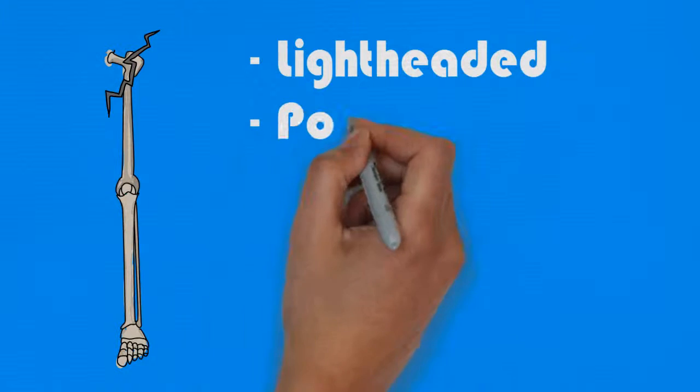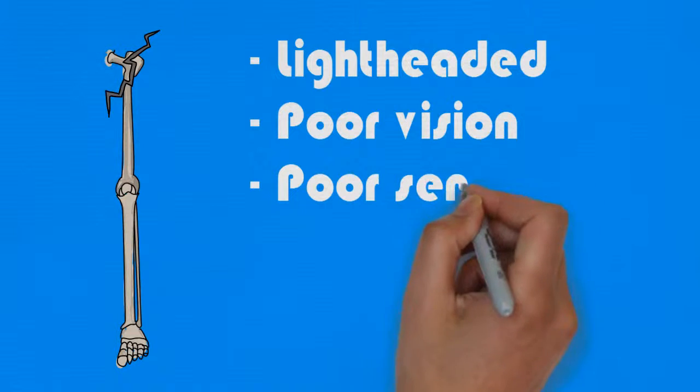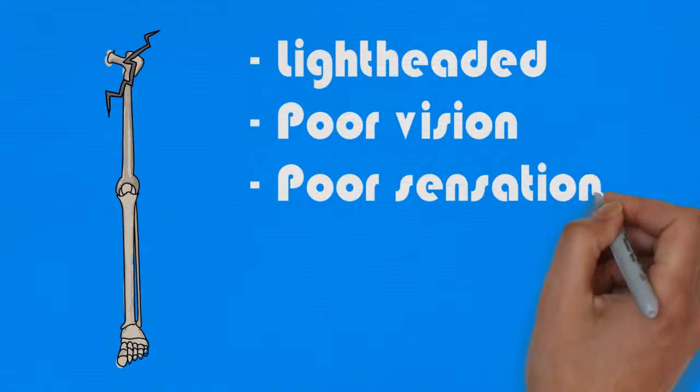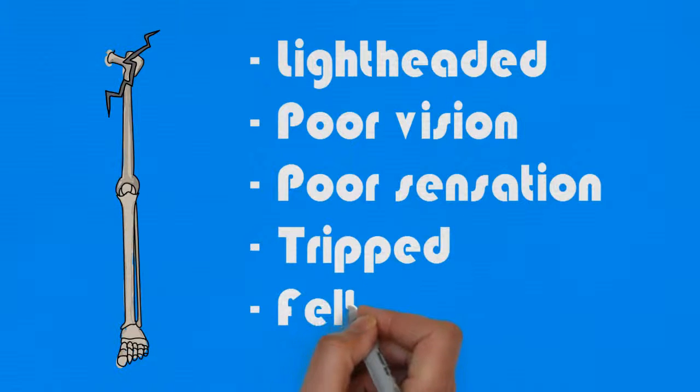So there you have the real story of Pearl's fall. She stood up to go to the toilet, felt light-headed, couldn't see her feet, caught them on something, overbalanced, responded slower than she would have done a few years ago, didn't have the muscle strength to respond, and ended up on the floor, where she thankfully didn't break anything.